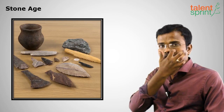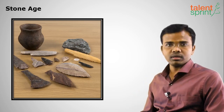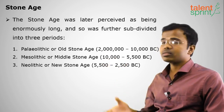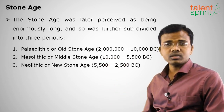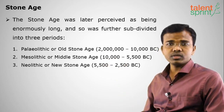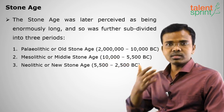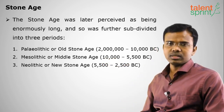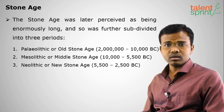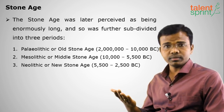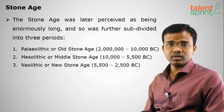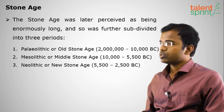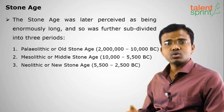We are currently in 2018 AD, that is 2018 years after the birth of Christ, in the Common Era. The basic tool used by homo sapiens — human beings — was stone, which is why it is called the Stone Age. Later, metals such as bronze, copper, and iron were used after the Stone Age.